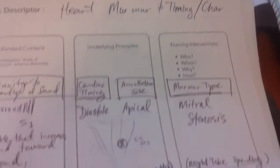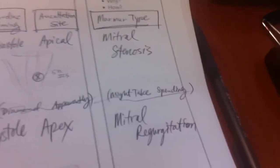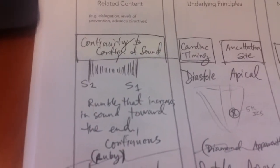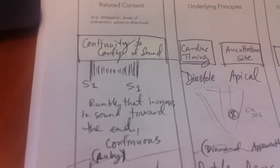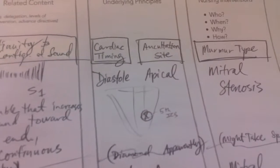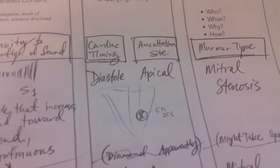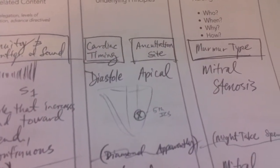We're going over murmurs and timing — specifically mitral stenosis and mitral regurgitation. Mitral stenosis is a rumble that increases in sound towards the end, a continuous sound between S2 and S1. It's heard during diastole and heard at the apical pulse, which is the 5th intercostal space.